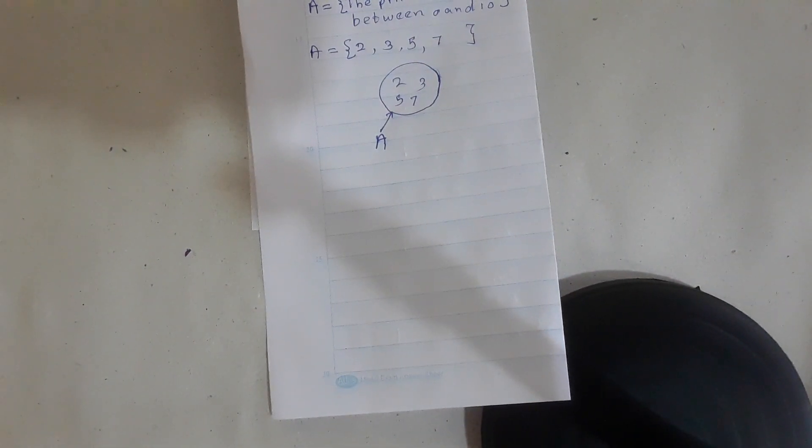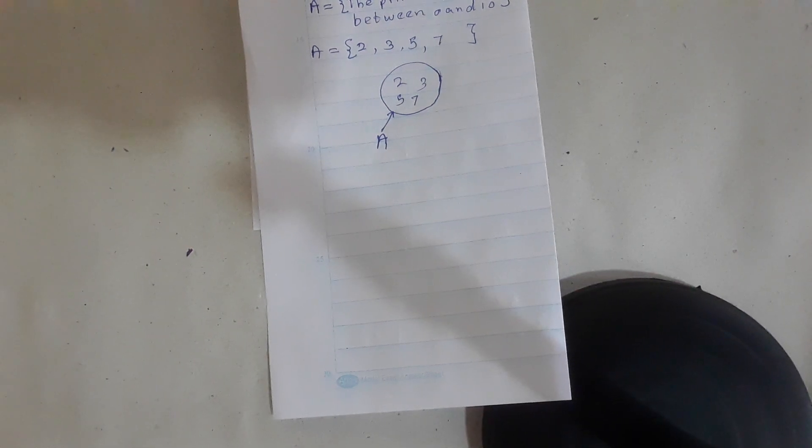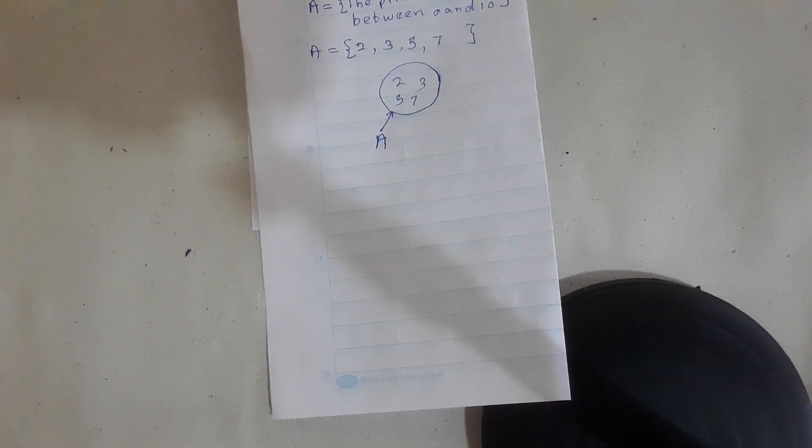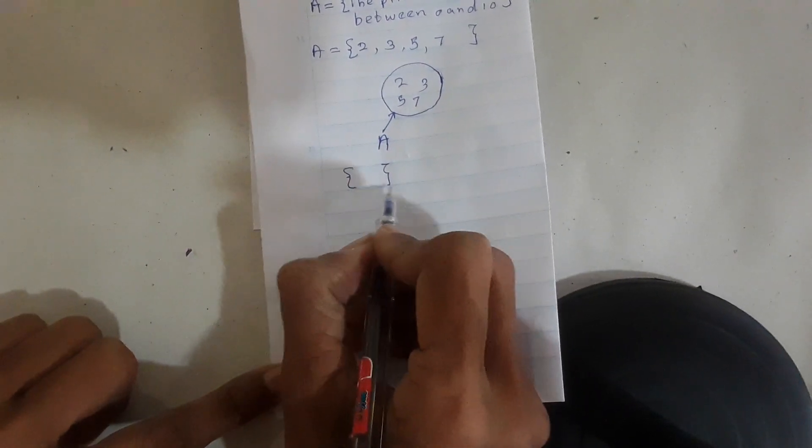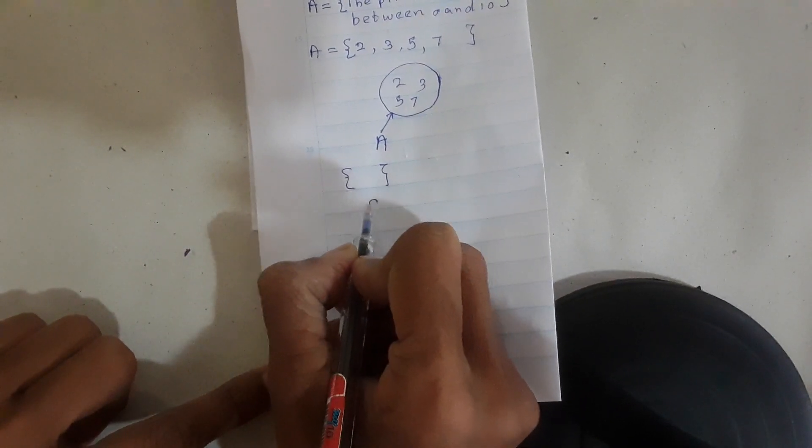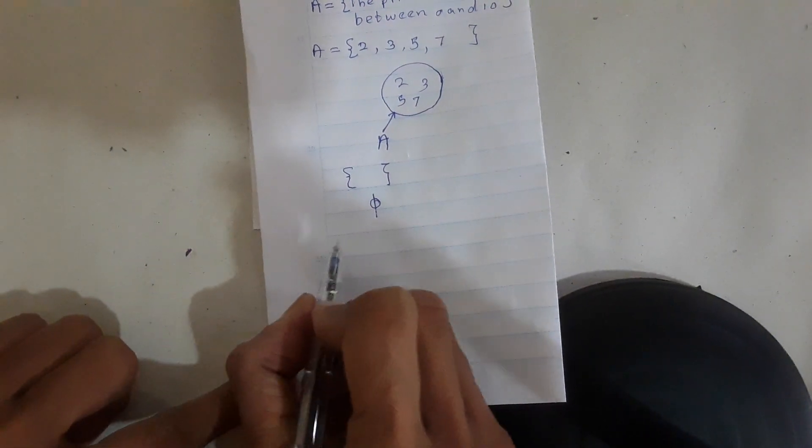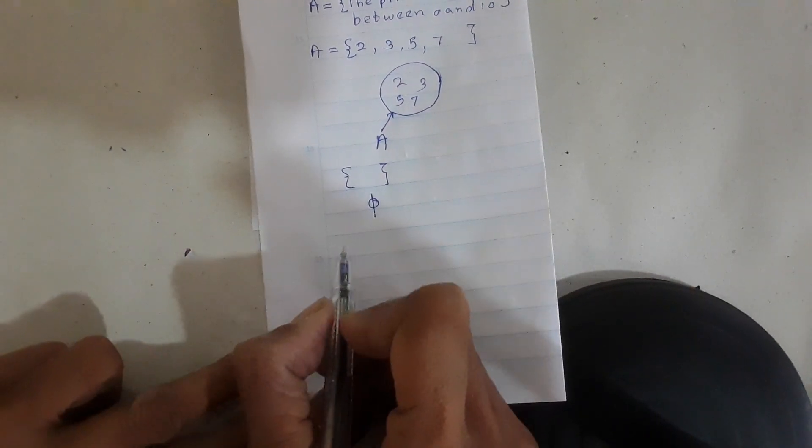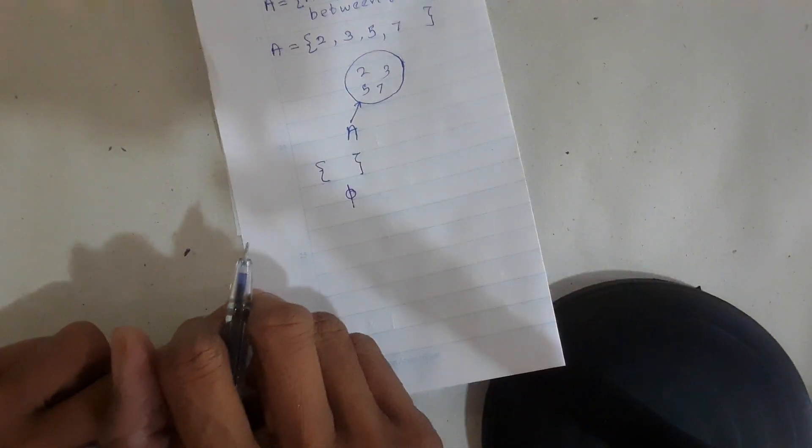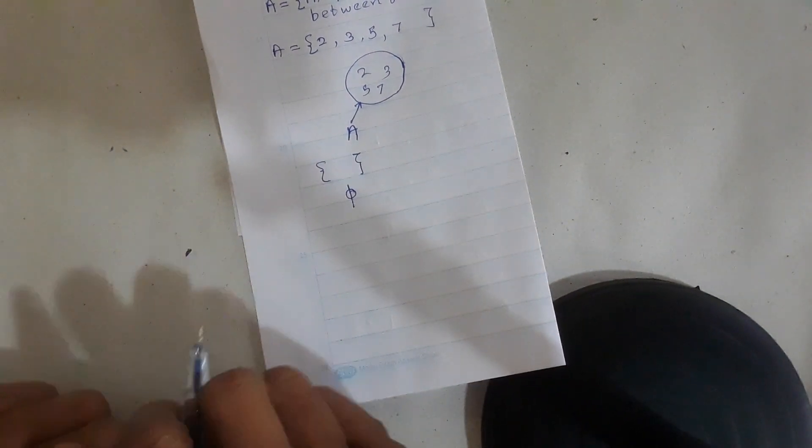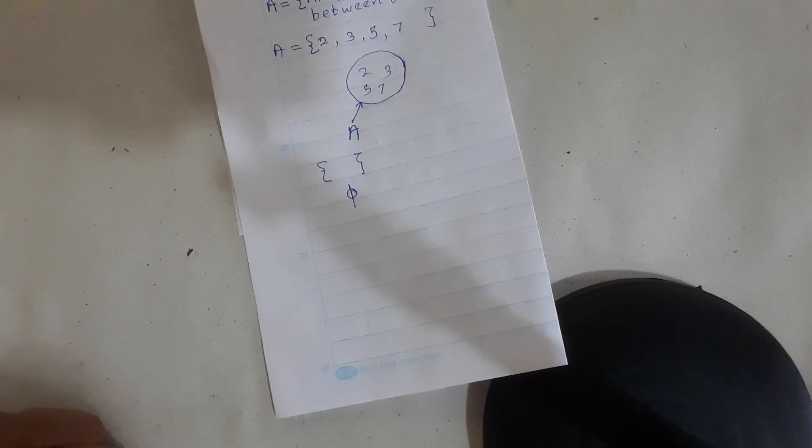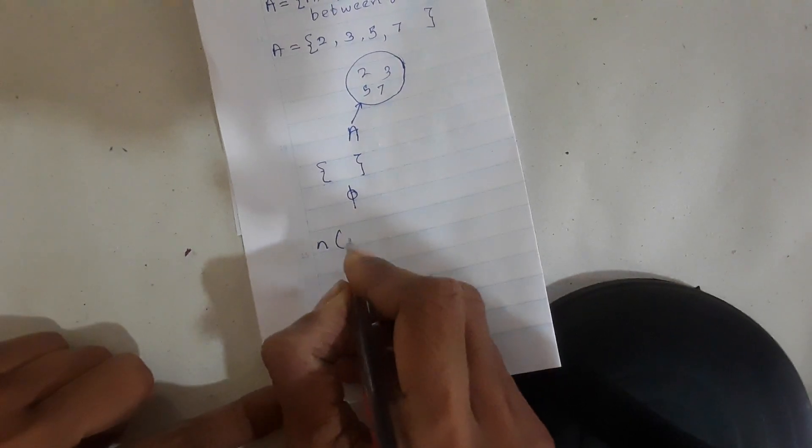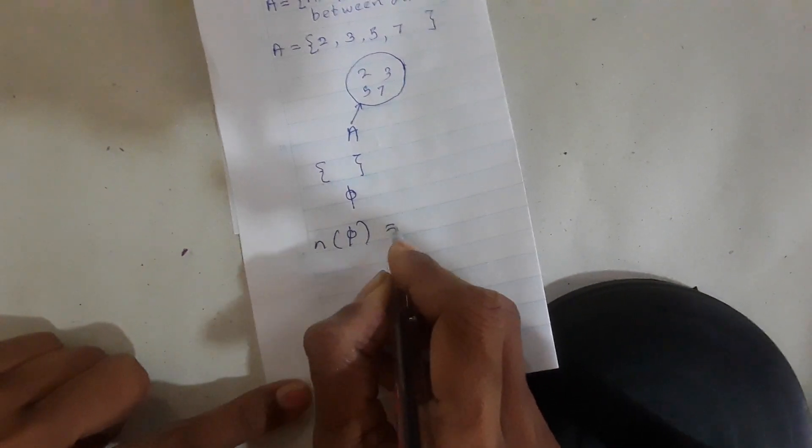The set which has no element is known as the null set. The null set is denoted by this symbol. For example, even numbers between 0 and 1. There are no elements. Null set. Number of the elements of null set is 0.